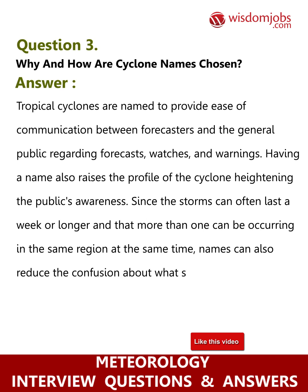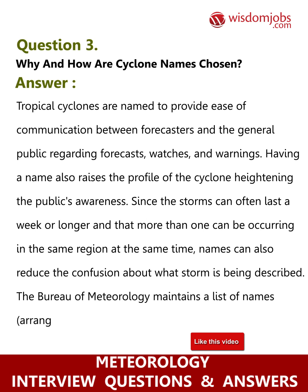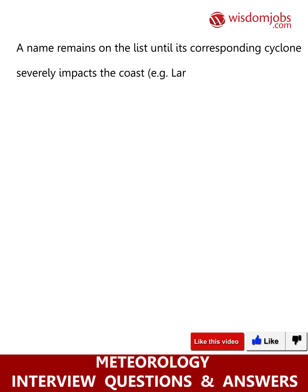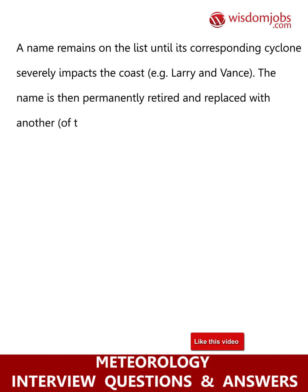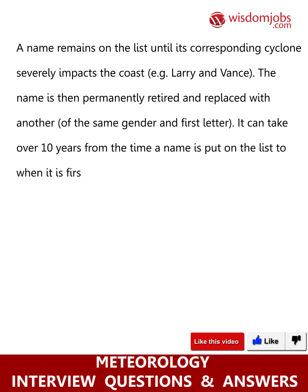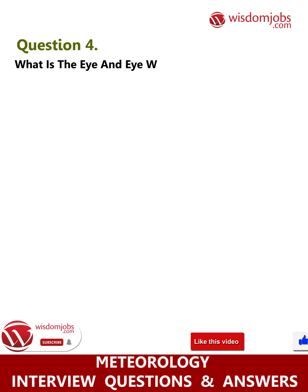Names can also reduce confusion about what storm is being described. The Bureau of Meteorology maintains a list of names arranged alphabetically and alternating male and female. A name remains on the list until its corresponding cyclone severely impacts the coast — e.g., Larry and Yasi. The name is then permanently retired and replaced with another of the same gender and first letter. It can take over 10 years from the time a name is put on the list to when it is first used.